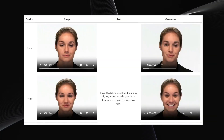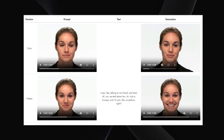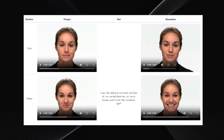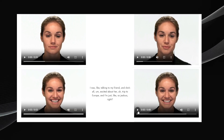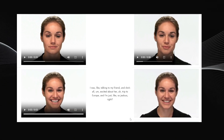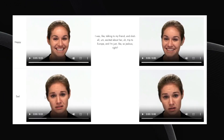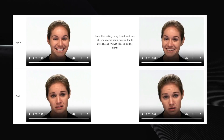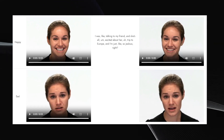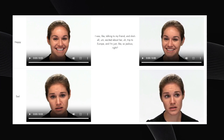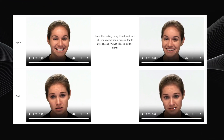A really neat feature of OmniTalker is its ability to capture and reflect emotion. You can influence the emotional tone of the generated video by using a reference video that displays that emotion. For example, if you provide an input clip where the subject looks happy while speaking and then give it a script, the resulting video will show her delivering those lines with a similar happy expression. Contrast this: if you use an input clip where she looks sad, even if she's saying the exact same script, the generated output will show her looking sad while speaking. It's a powerful way to control the nonverbal cues in the generated video.